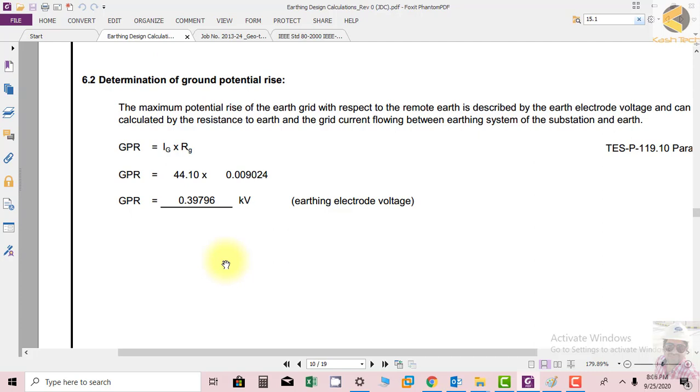You can control the ground potential rise by reducing the ground resistance. The ground resistance can be controlled by selecting thicker or more cross-sectional area conductor in the mesh, increasing the number of rods, and decreasing the effective resistance of the earth.